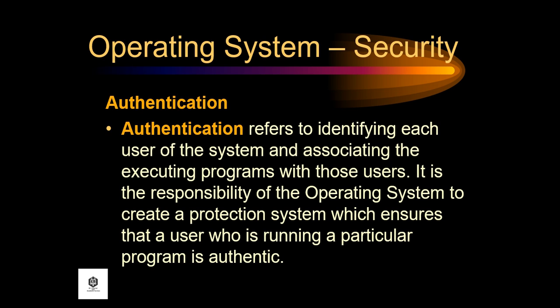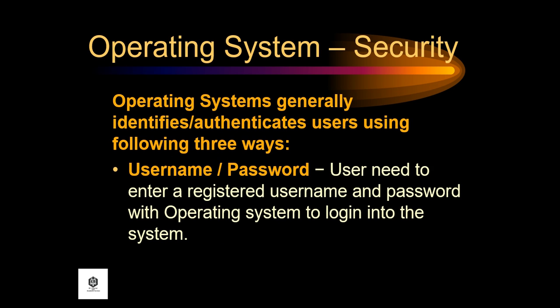It is the responsibility of the operating system to create a protection system which ensures that a user who is running a particular program is authentic. Operating systems generally identify or authenticate users using the following three ways: first, with username and password.